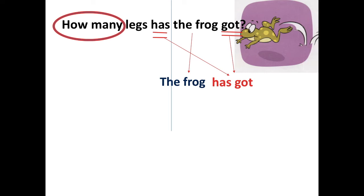How many. Instead of the question word how many, we give an answer. Four. And four what? Legs. The frog has got four legs. Wonderful!